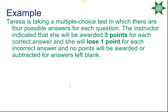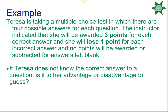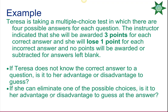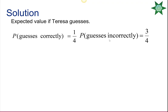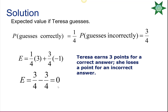Teresa is taking a multiple-choice test with four possible answers per question. She earns 3 points for a correct answer and loses 1 point for an incorrect answer. If she guesses randomly, the probability of being correct is 1/4 and incorrect is 3/4. Expected value = (1/4)(3) + (3/4)(−1) = 0. There's no gain or penalty to guessing when she can't eliminate any answers.